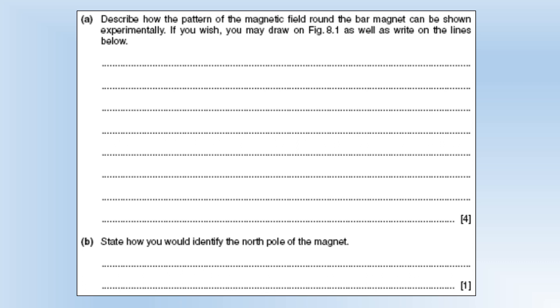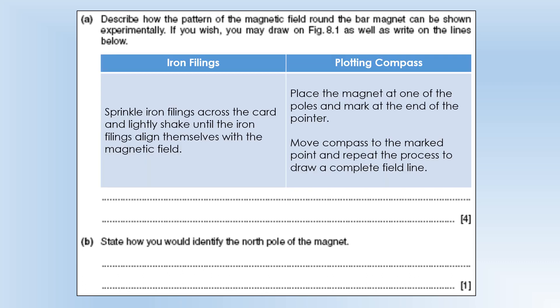I think there are two ways you could go about doing this. One way is using iron filings. So you sprinkle iron filings across the card and then lightly shake it until the iron filings align themselves in the magnetic field. It's not just enough to pull the filings on. They will generally land on field lines but not quite. When you shake it they'll all line themselves up and sit on top of field lines.